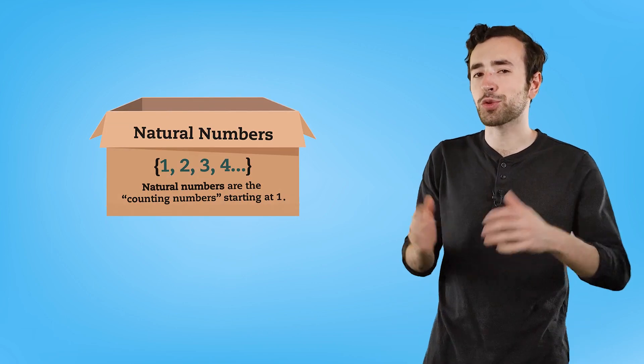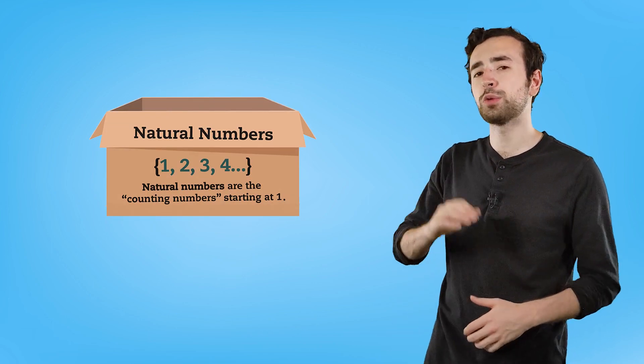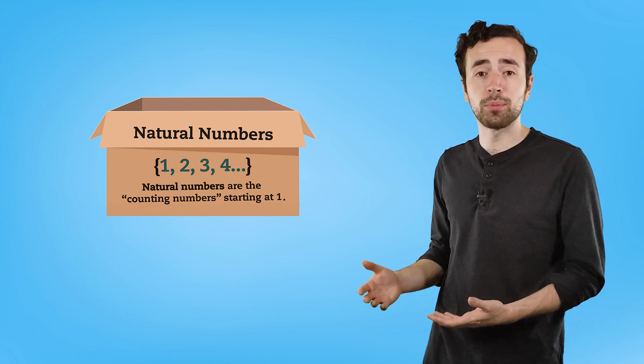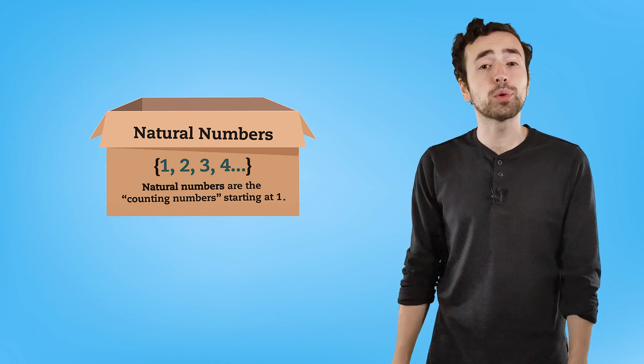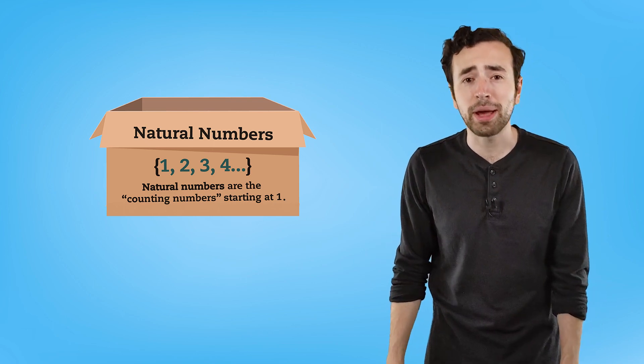What are some ways you can think of to group numbers together? Maybe you thought of whole numbers, negative numbers, decimals, or fractions. And that's a great start. But let's begin with the numbers we use most — the natural numbers, or counting numbers. The natural numbers are the ones we use when we count things, like the number of t-shirts my cousin gave me.